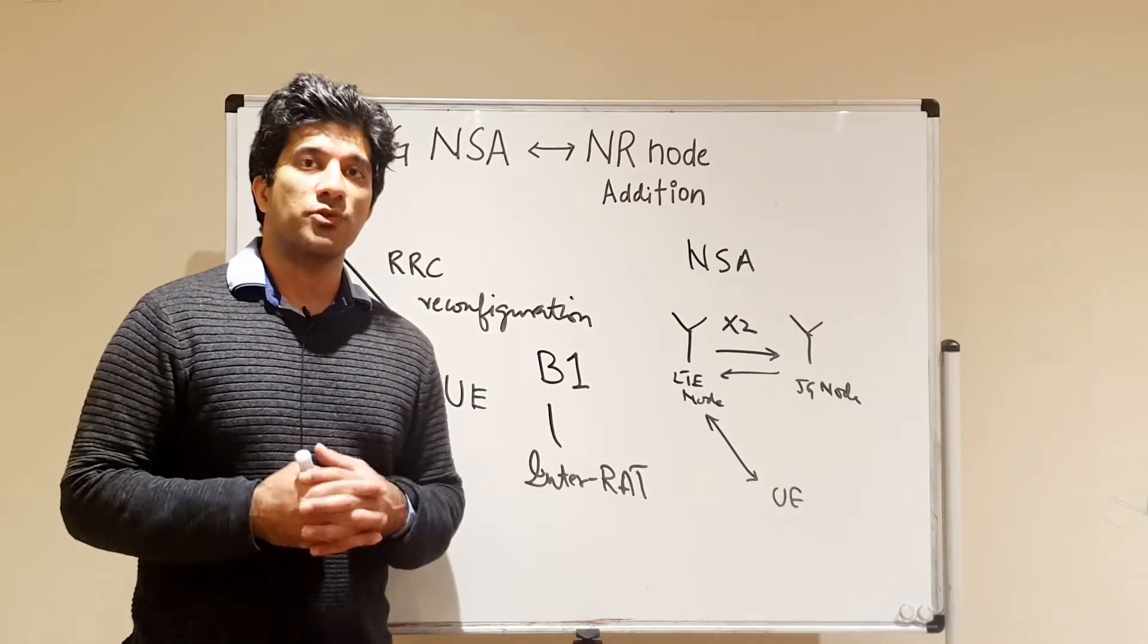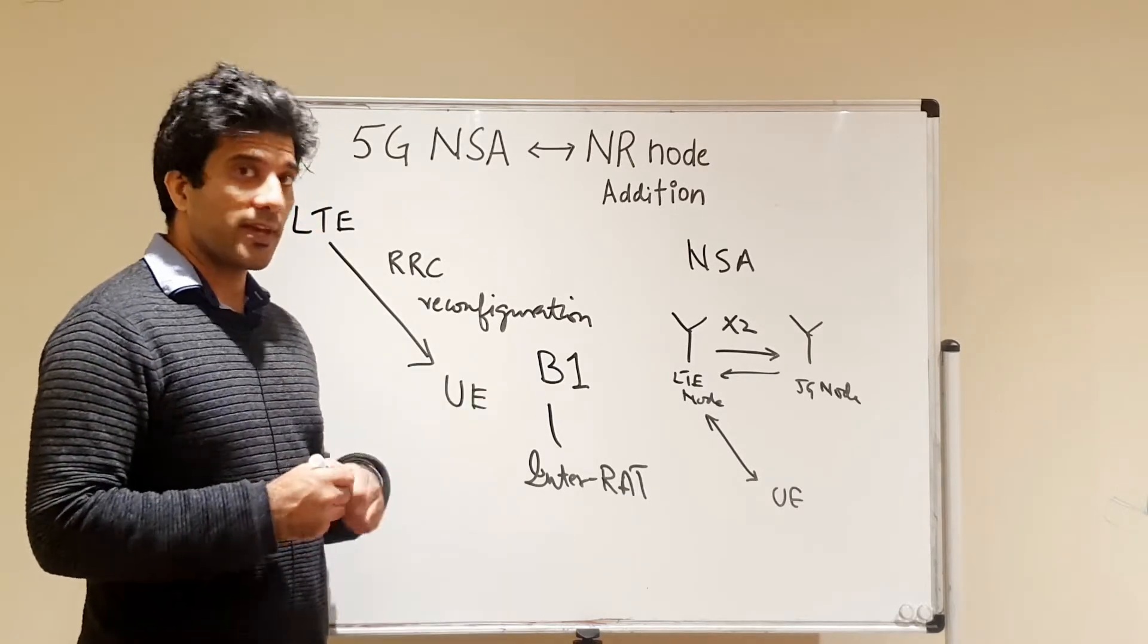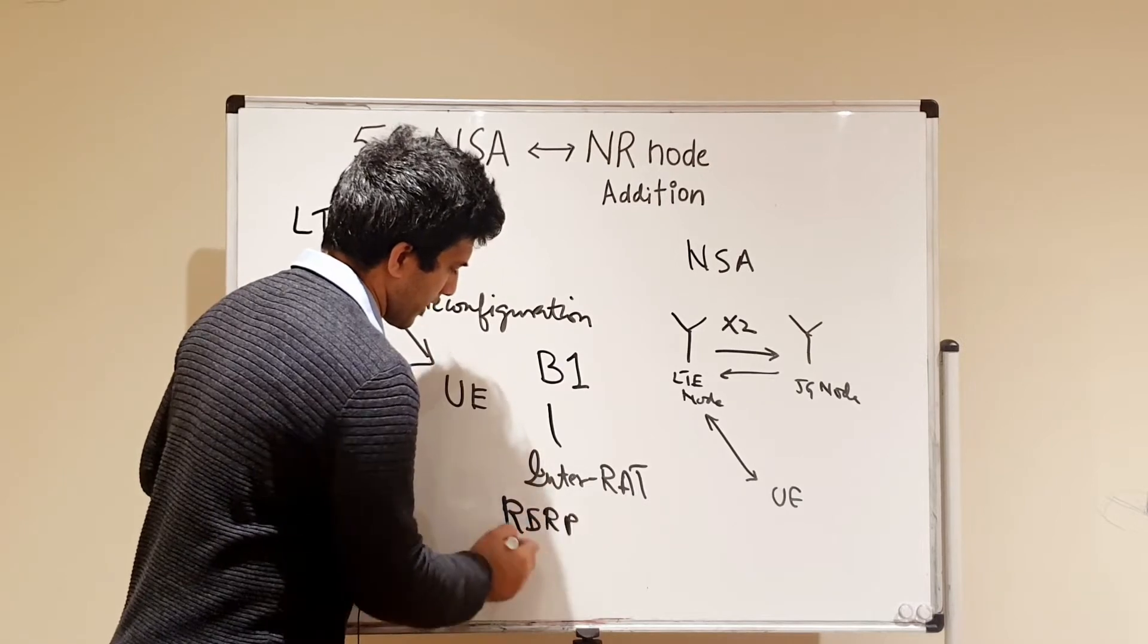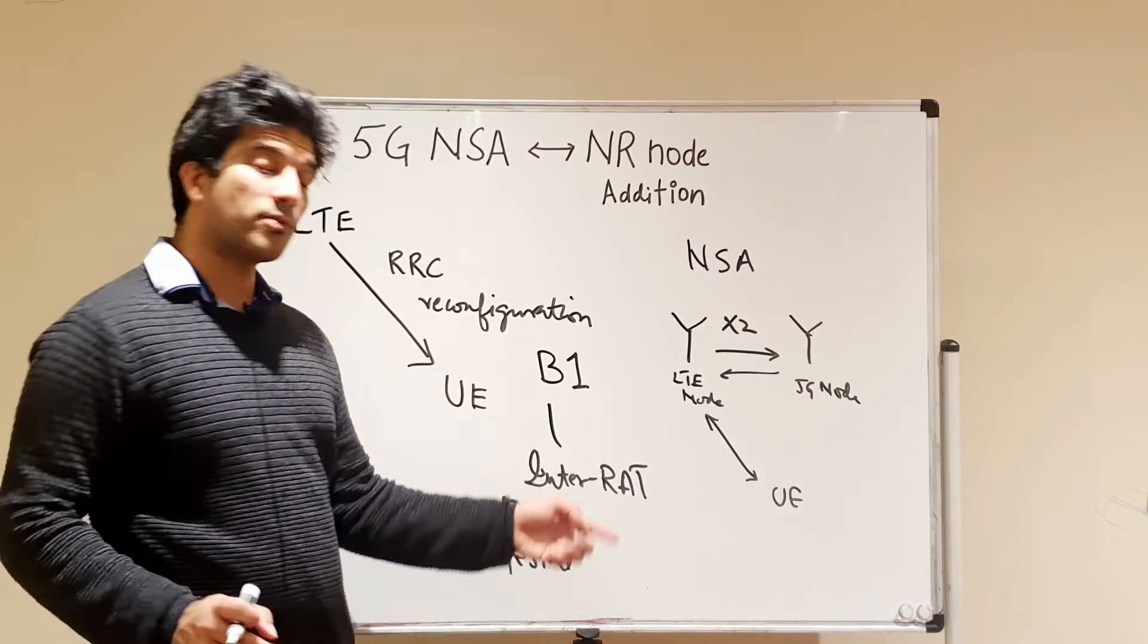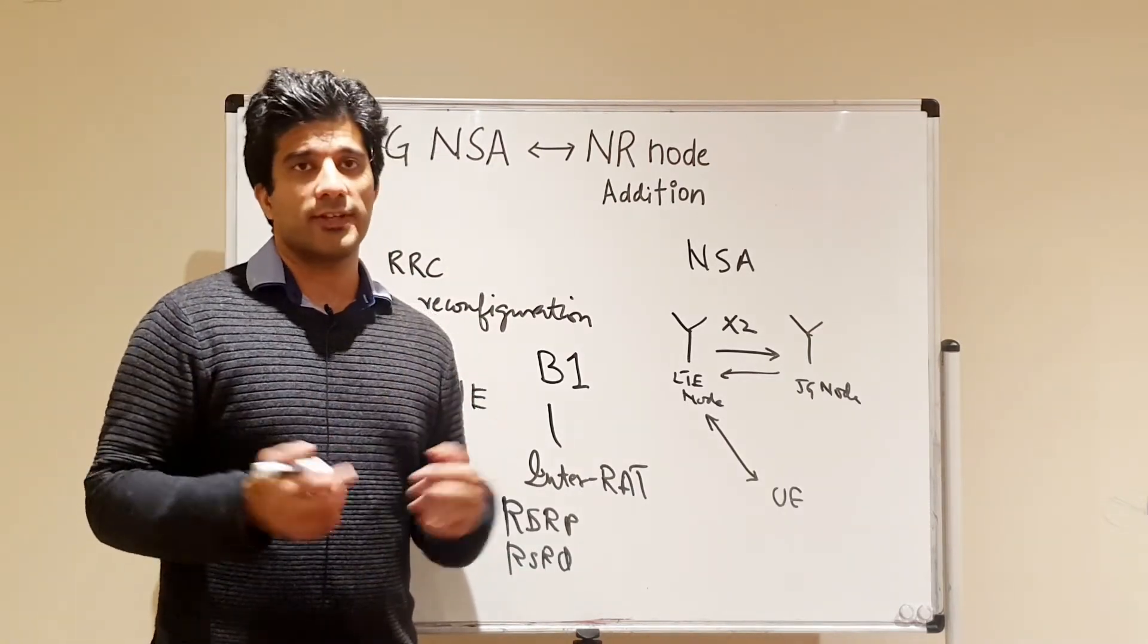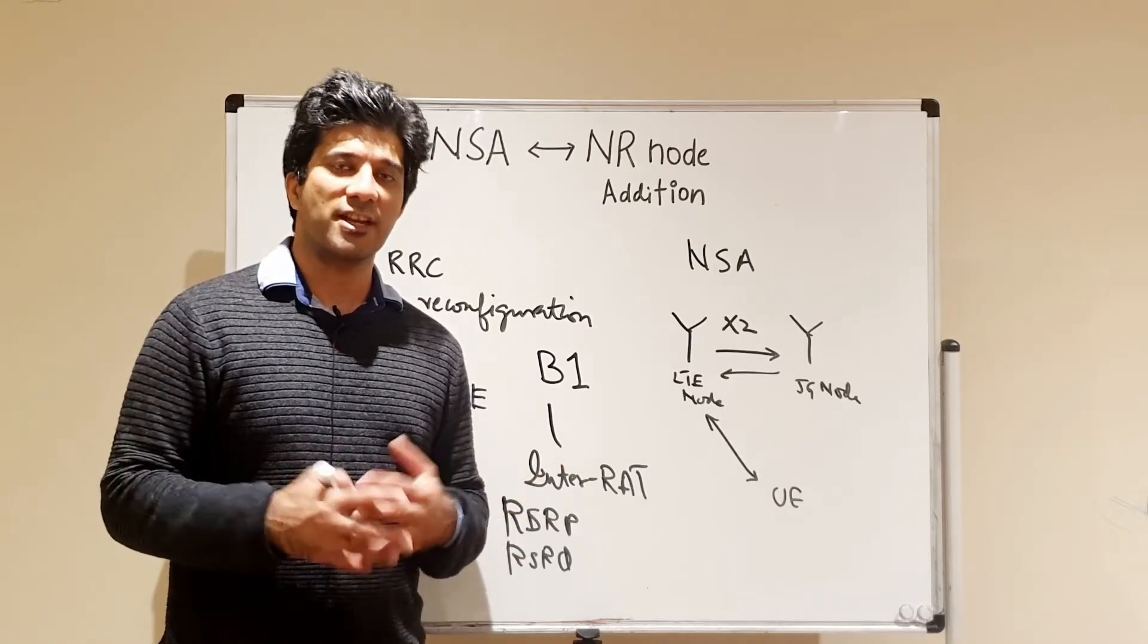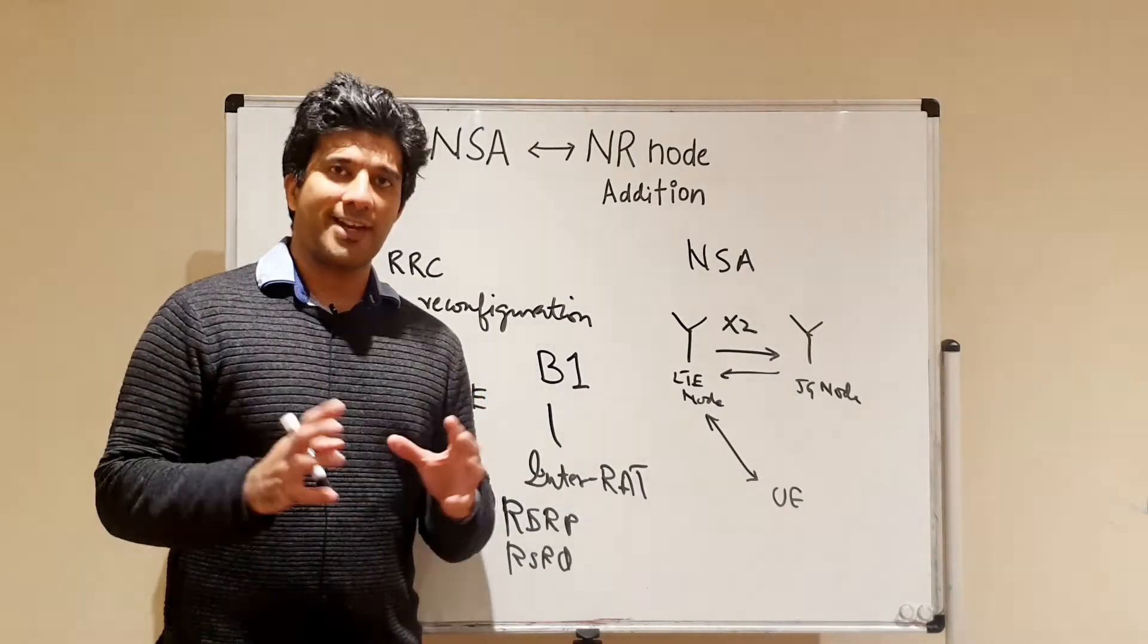This B1 will basically communicate to the UE that at which level you should start monitoring your NR secondary cell so that you can add that secondary cell. This will basically be RSRP, it can be RSRP, it can be RSRQ as well, but this will basically give you that value.